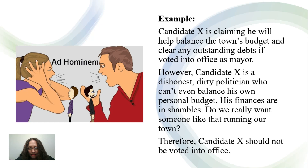Let's look at an example. Candidate X is claiming he will help balance the town's budget and clear any outstanding debts if voted into office as mayor. However, Candidate X is dishonest, a dirty politician who can't even balance his own personal budget. His finances are in shambles. Do we really want someone like that running our town? Therefore, Candidate X should not be voted into office.